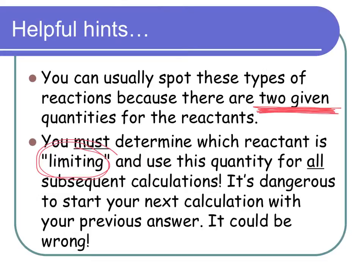Always use the limiting reactant for all subsequent calculations. It's dangerous to start a new calculation with an answer you just got, because if that answer is wrong, everything after that will be messed up. So if you have an opportunity to go back and start with the given, I highly recommend it.